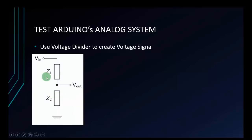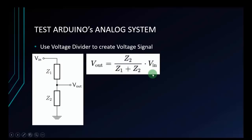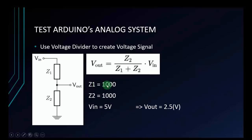This is the voltage divider. I have two resistors: Z1 and Z2. Z1 is connected to VIN and Z2 is connected to GND. Between Z1 and Z2 is the VOUT. When connected like this, you can get the VOUT voltage you want by changing the values of the two resistors. The formula to calculate VOUT is: VOUT = (Z2 / (Z1 + Z2)) × VIN. Assuming Z1 = 1000 ohms and Z2 = 1000 ohms with VIN = 5 volts, we get VOUT = 2.5 volts.